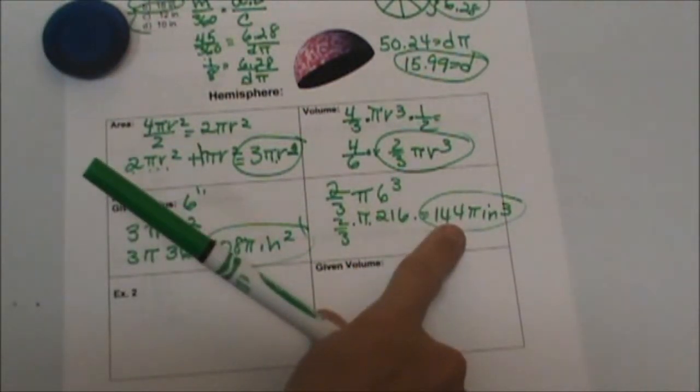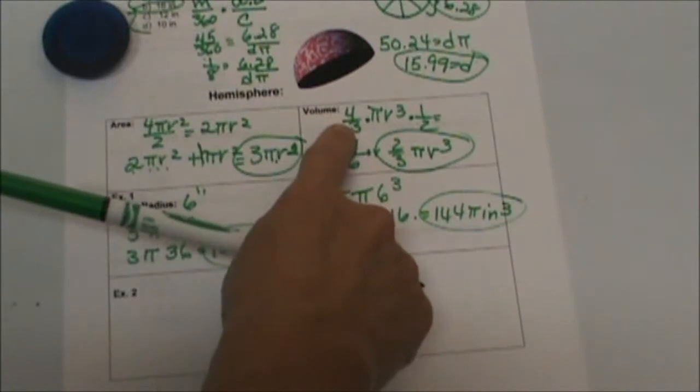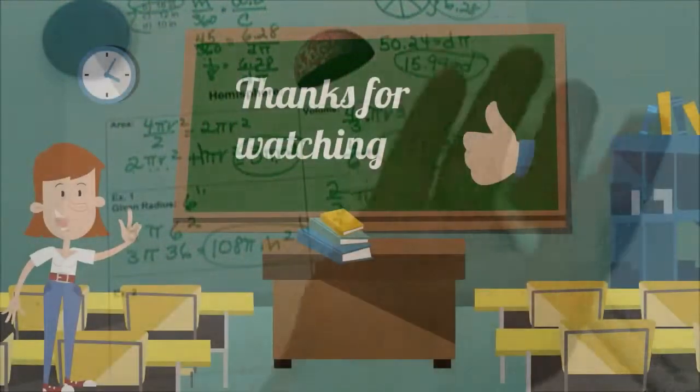The other option for a hemisphere, you can find the volume of the whole sphere and just take that answer and divide it in half if you want to.